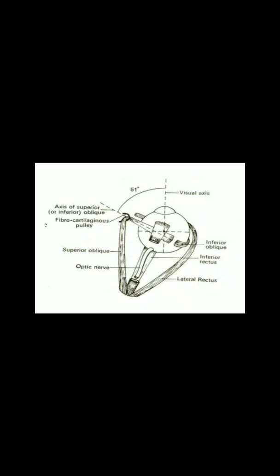This picture shows the insertion of the superior oblique muscle. As you can see, the superior oblique muscle is coming from the superior orbital fissure, then taking a U-turn from the pulley and getting inserted below the superior rectus. While doing so, it is making an angle with the visual axis, and this angle is 51 degrees. This angle really decides how and what action is performed by the superior oblique.